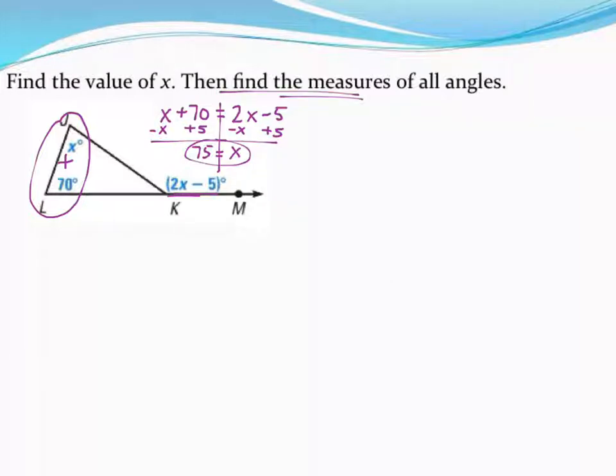So knowing x let's plug that back in to figure out what my two angles are. So this top angle in the triangle well that's easy. That's just x. So that's 75 degrees.